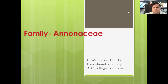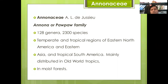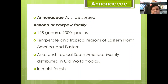The first family given in your syllabus is Annonaceae. We will see its salient features, characters, distribution, floral formulas, and morphological characters. Annonaceae is also known as the Papaw family. It has 128 genera and 2300 species distributed all over the world — in temperate and tropical regions of eastern North America, eastern Asia, tropical South America, and mainly in the old tropics and moist forests.